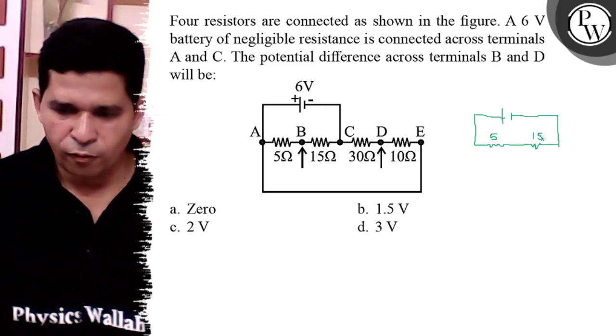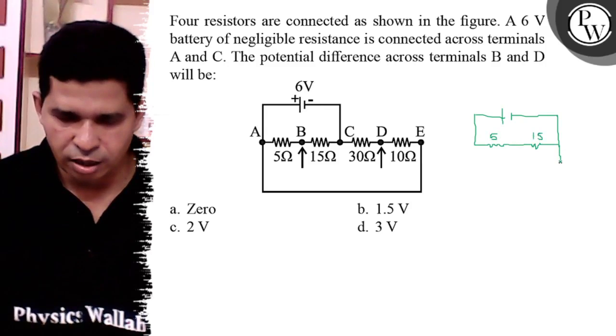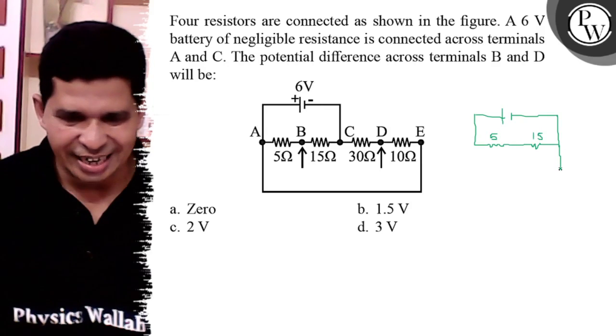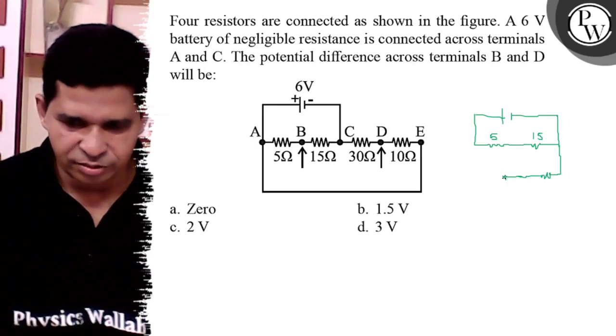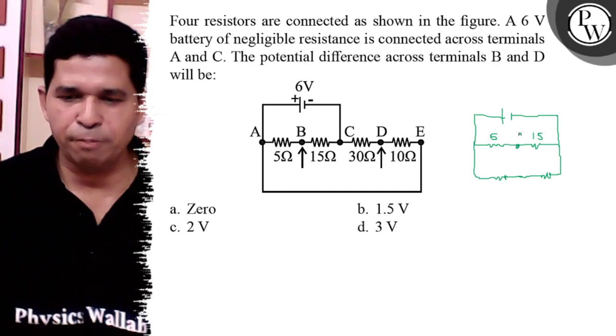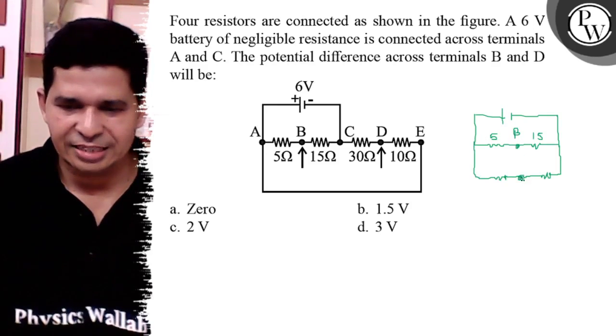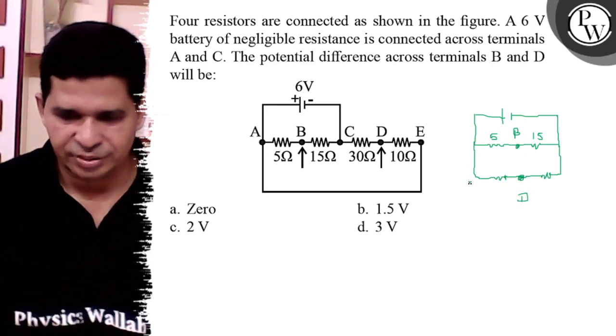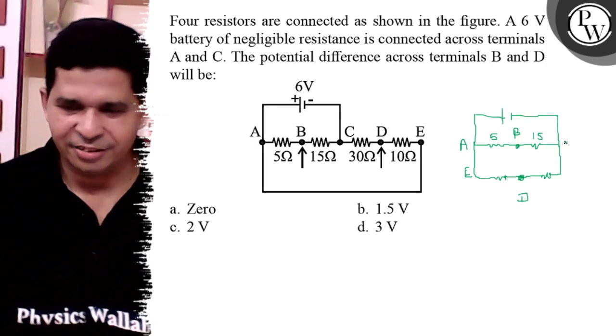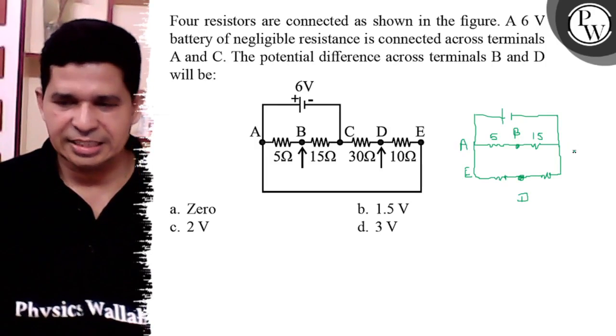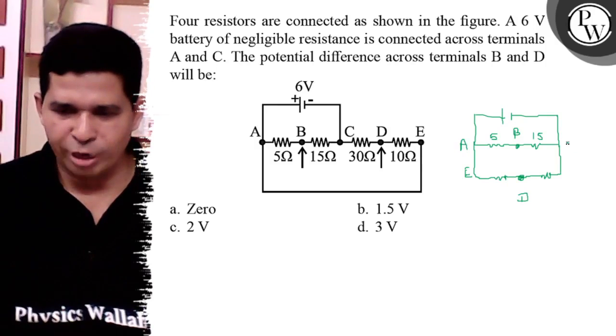Now point E is connected to A. So it is 10 ohm that constructs this. This is point B and this is point D. E is connected to A and this is point C.